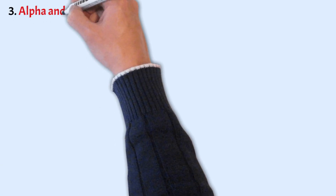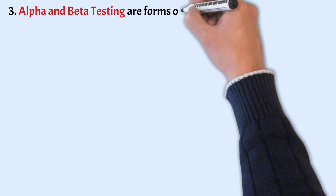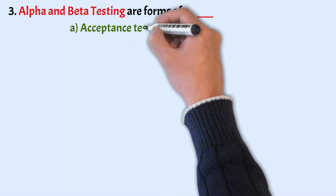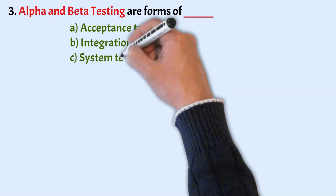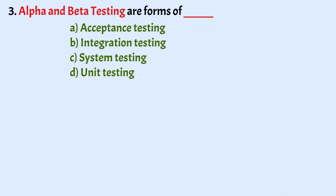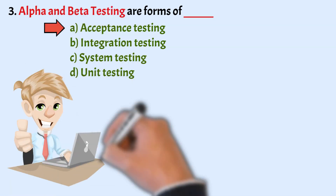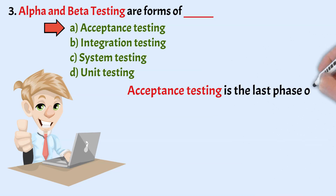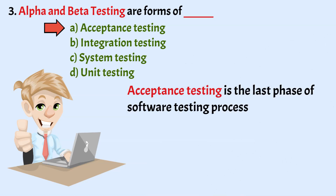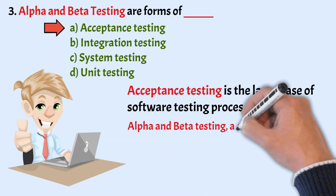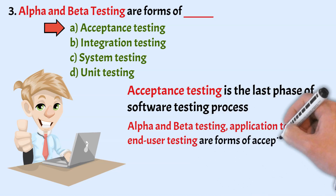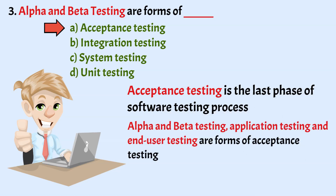Question 3: Alpha and Beta Testing are forms of which testing? Options: Acceptance Testing, Integration Testing, System Testing, and Unit Testing. The correct answer is Option A, Acceptance Testing. Acceptance Testing is the last phase of the software testing process before making the system available for actual use. Alpha and Beta Testing, Application Testing, and End User Testing are all forms of Acceptance Testing.